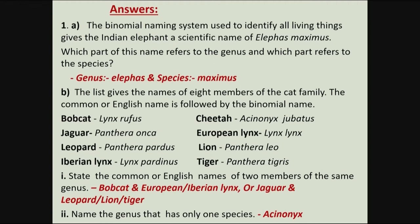The next part asked you to name the genus that has only one species. That genus with only one species is Acinonyx.